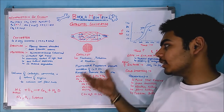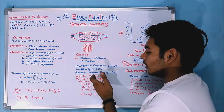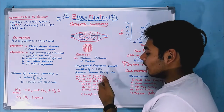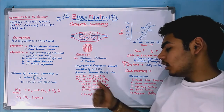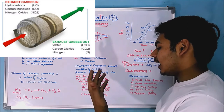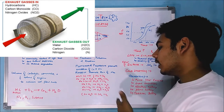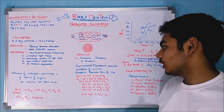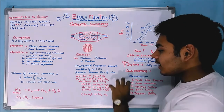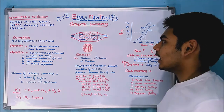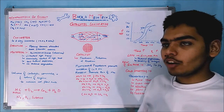Several reactions take place inside the catalytic converter. NO and CO can react to form N₂ and CO₂, or may form ammonia or nitrogen oxide. If NO reacts with hydrogen, it can form N₂, NH₃, and N₂O. If CO reacts with water, it can produce carbon dioxide and hydrogen. Platinum, palladium, and rhodium boost and increase the rate of all these reactions.